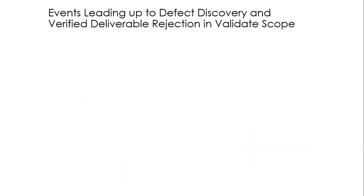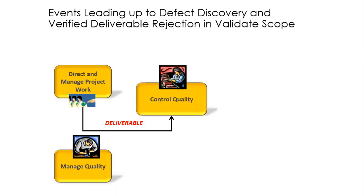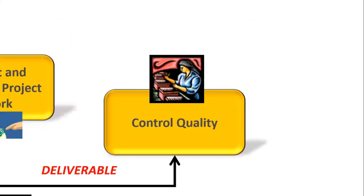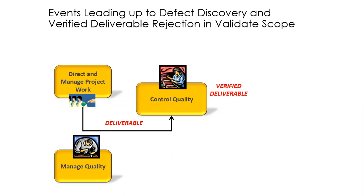The second scenario is very similar — it's events leading up to defect discovery and verified deliverable rejection in validate scope. Direct and manage project work, as usual, creates the deliverables. Manage quality checks the process before the deliverable is produced. The deliverable is produced and goes to control quality again. Inspection is front and center in this process — this is where we inspect the deliverable internally before it goes to the customer. If we find the deliverable is fit to go to the customer, then we label it as a verified deliverable.